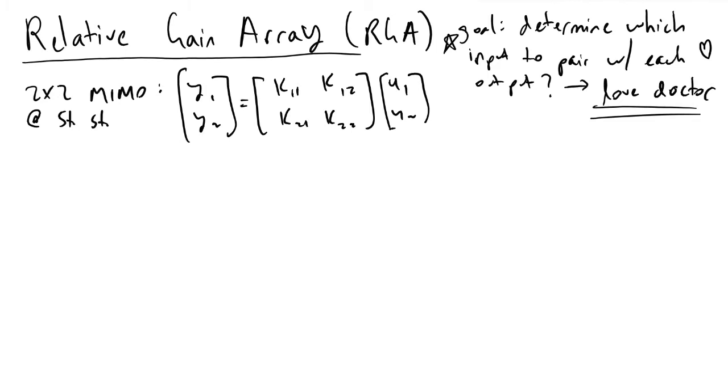We've got two outputs, two inputs, and we're going to be analyzing this system at steady state. At this steady state, we will understand the gain instead of dealing with the transfer functions. We're now going to be working with just the gains k11, k12, k21, and k22.